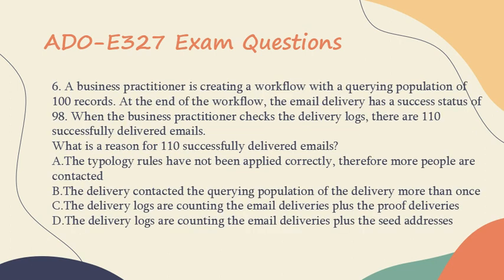Question 6: A business practitioner is creating a workflow with a querying population of 100 records. At the end of the workflow, the email delivery has a success status of 98. When the business practitioner checks the delivery logs, there are 110 successfully delivered emails. What is a reason for 110 successfully delivered emails?